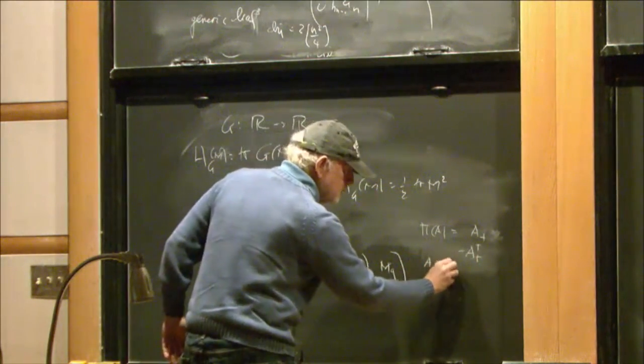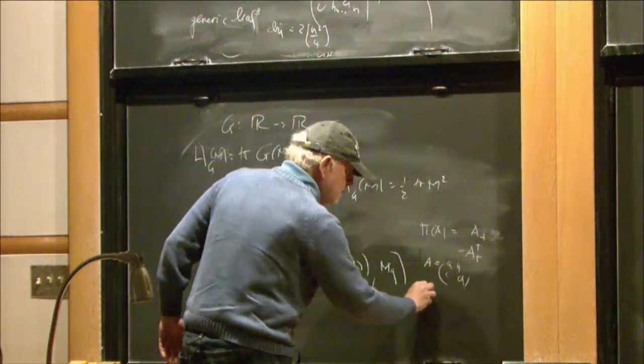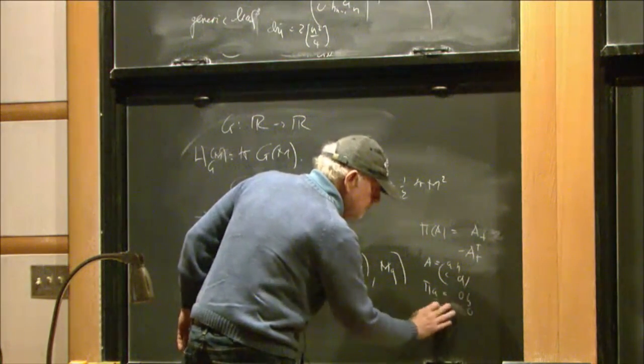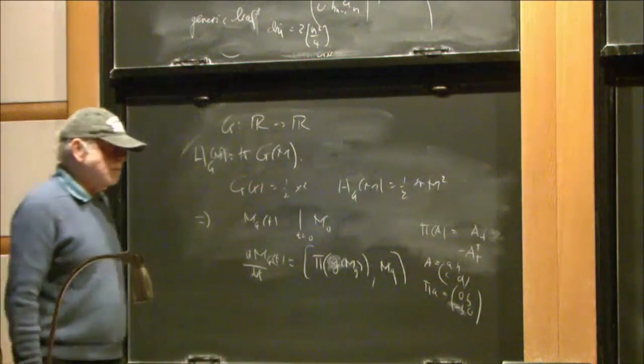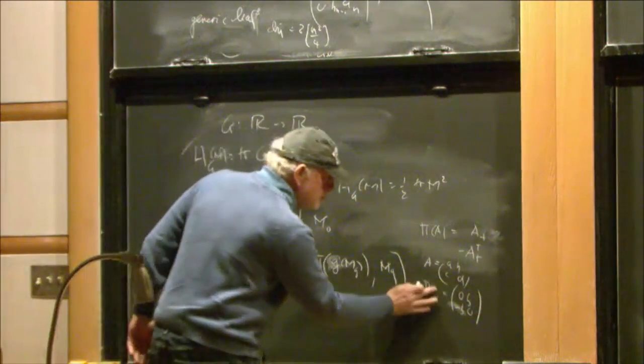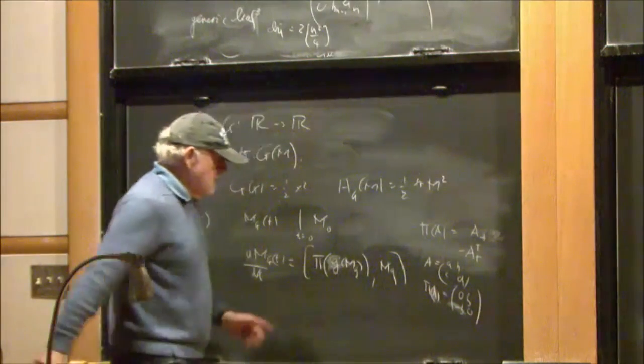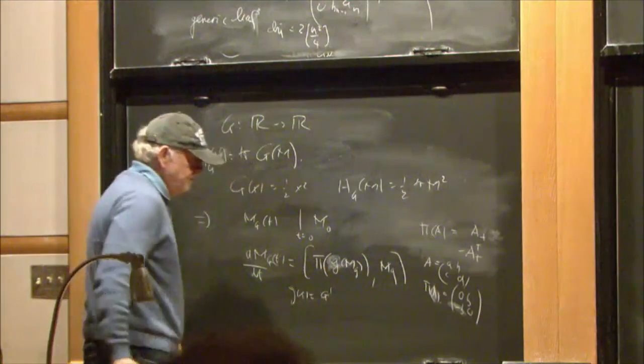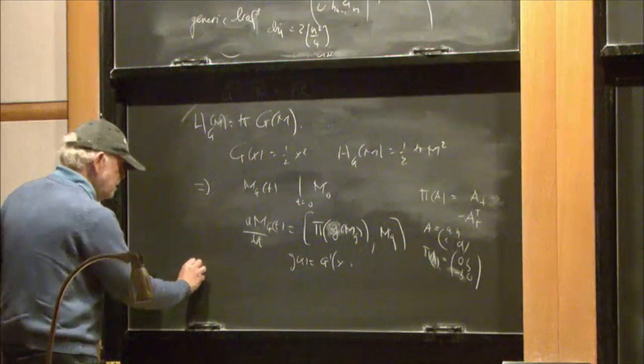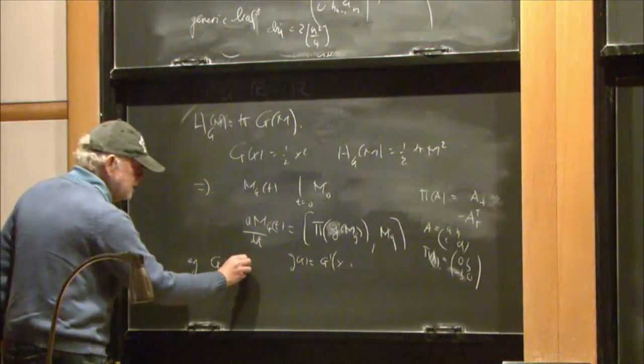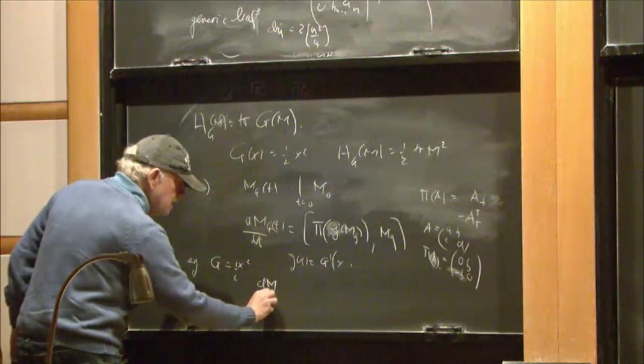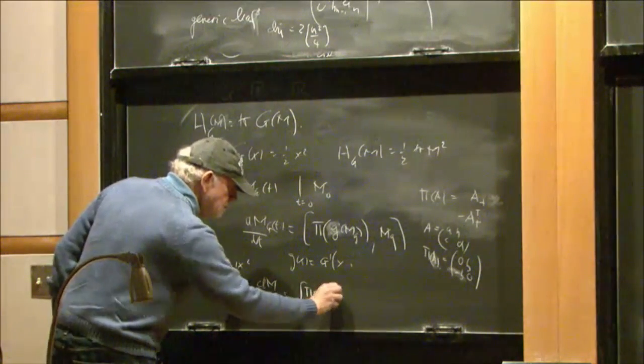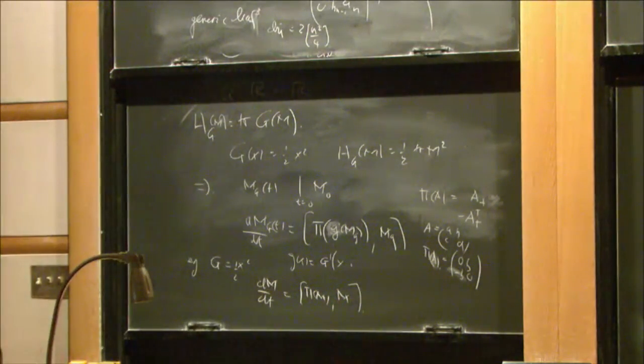So, if A was the matrix A, B, C, D, then PI of A is just 0, 0, B minus B transpose. PI of A. And little G of X is just G prime. So, for example, if we took G to be X squared over 2, then we'd be looking at DM by DT is just PI of M M. These are the flows.